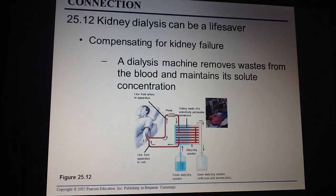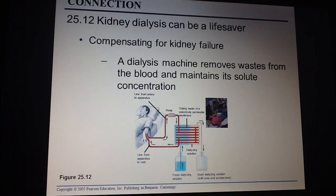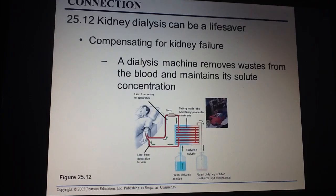If your kidneys are not working, you can have huge problems. Thankfully we have technology that does kidney dialysis. A dialysis machine uses computers to determine how much waste should be taken out of the blood and how much water should remain. By doing that, it acts as a replacement for the kidney itself. That is our excretory system.